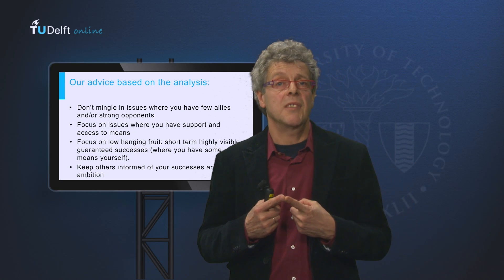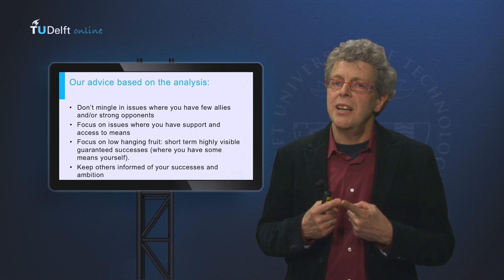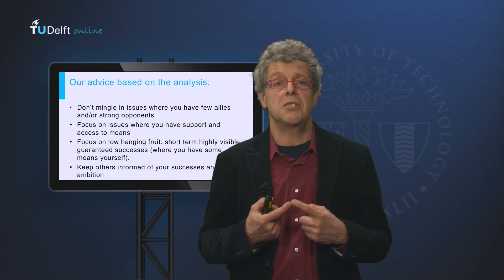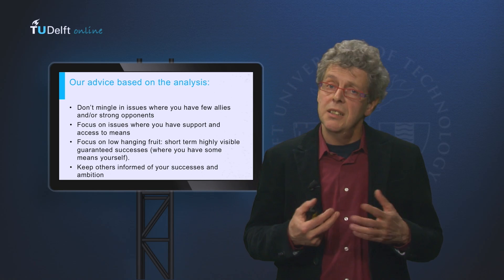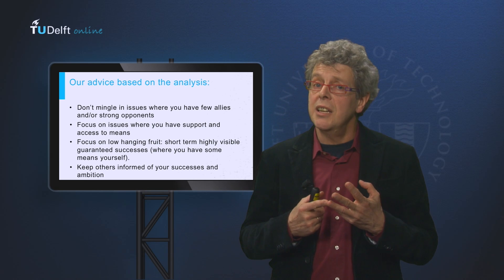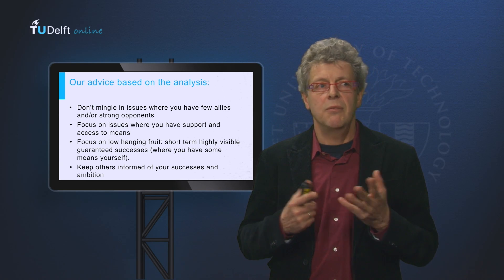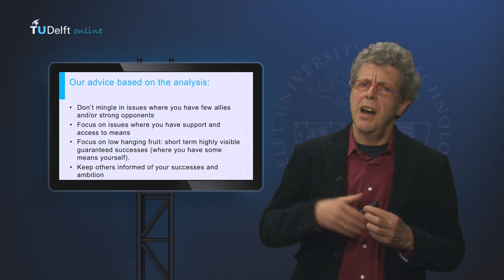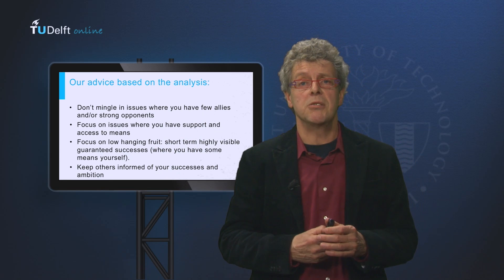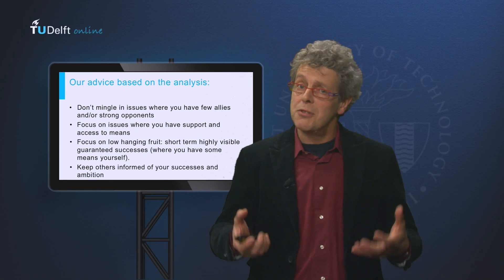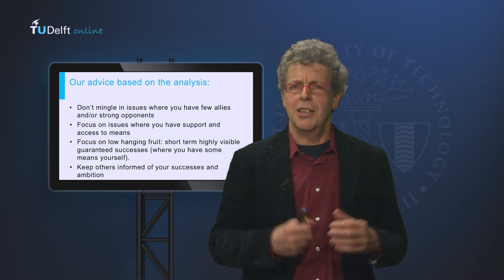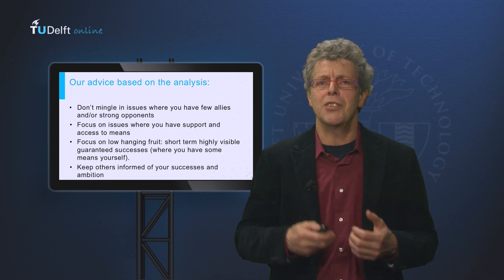For the roads and water transport sectors, the maps show that the platform has easy access to some strong supporters who actually have the means to do something about these issues, like anti-fouling and road runoff. These partners — the province itself and the regional water boards — show up clearly in the map. Finally, we had two strategic advices: focus on low-hanging fruit, go for short-term highly visible guaranteed successes that you can boast about — like an anti-fouling policy for boats — and where you have some means yourself so you have control. Keep others informed of these successes and of your ambition, and in that way you try to generate support.